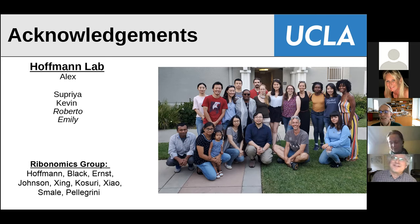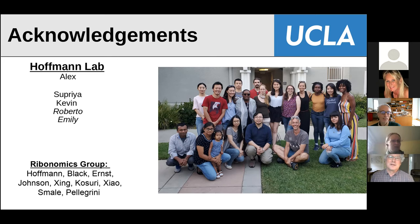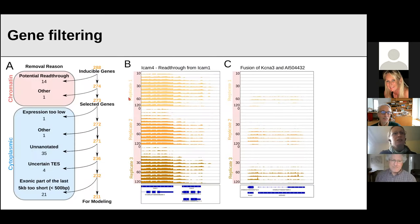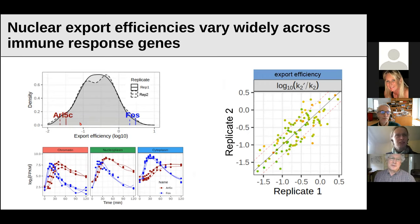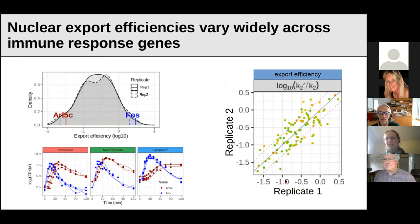So if you're producing a hundred transcripts on the chromatin and all of them get to the nucleoplasm, 10 will get into the cytoplasm — for some genes. That's really interesting. So looking at the efficiency distribution — it's more than a 10-fold range, so it's 10 to 34-fold. For some genes it's probably about five percent that are exported. The graph on the right shows a gene at 0.5 and another at minus 1.5 — it's a hundred-fold difference. Most genes are kind of in the middle, but a few are further out.